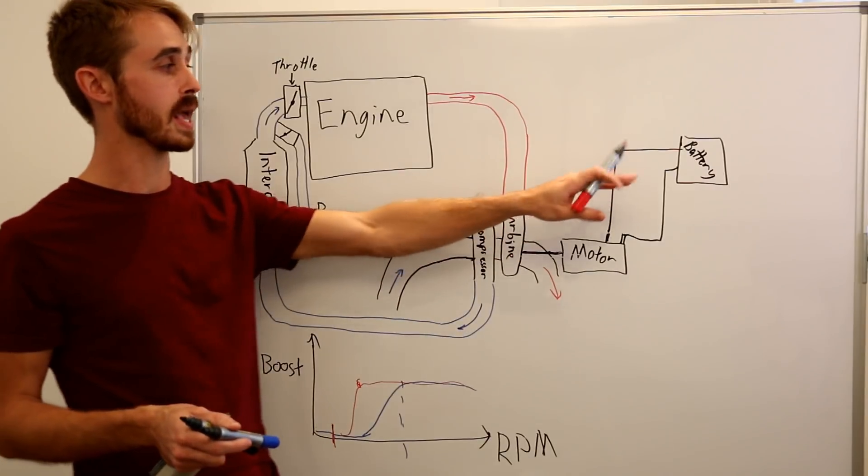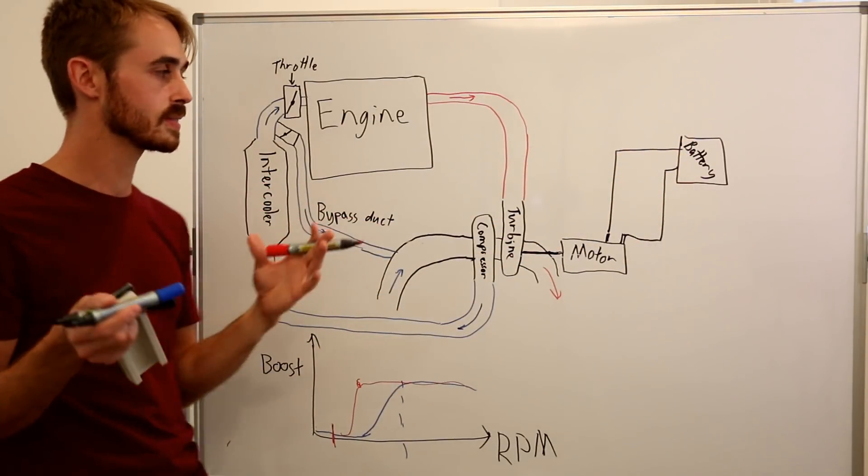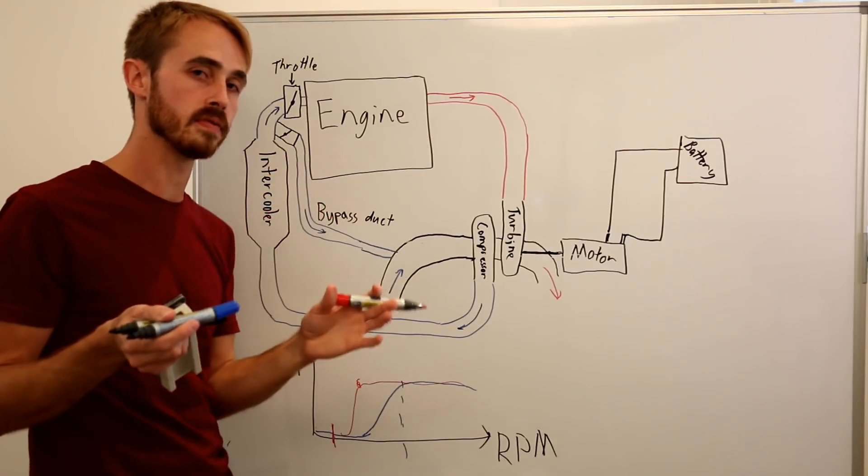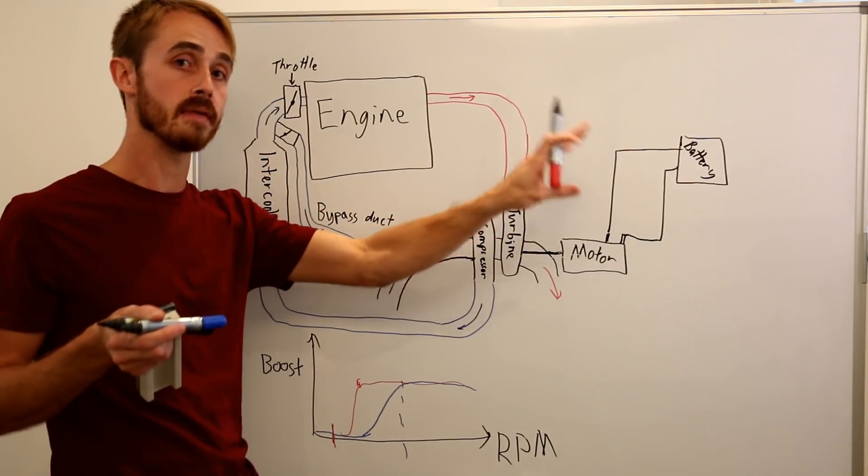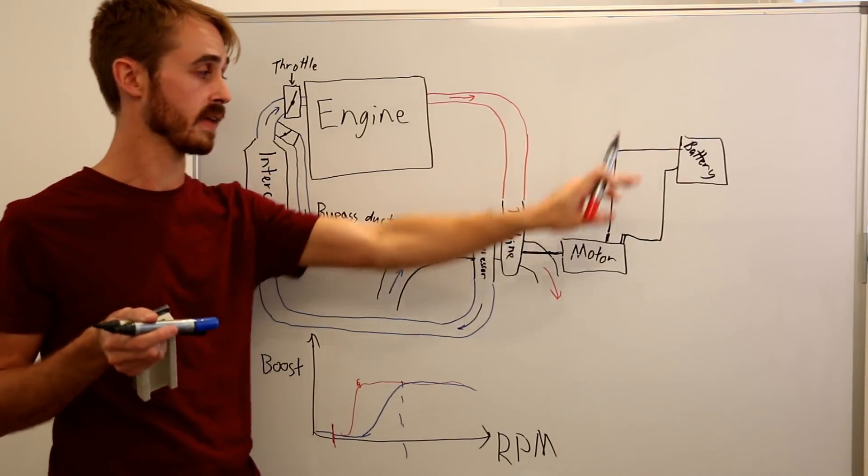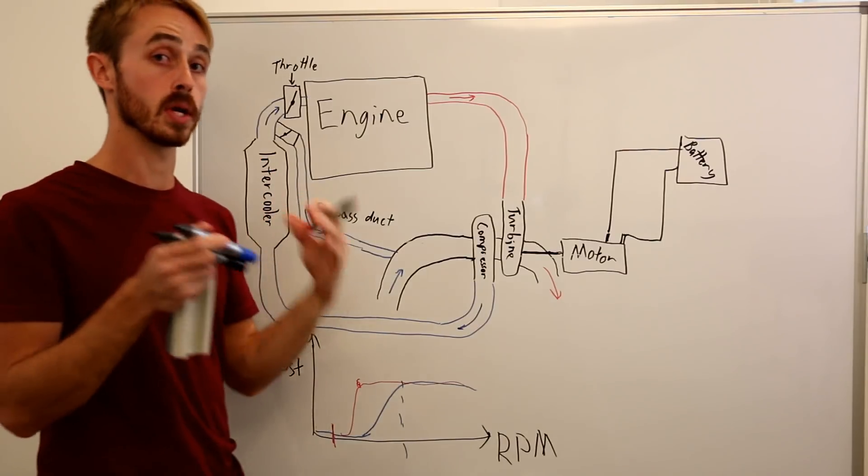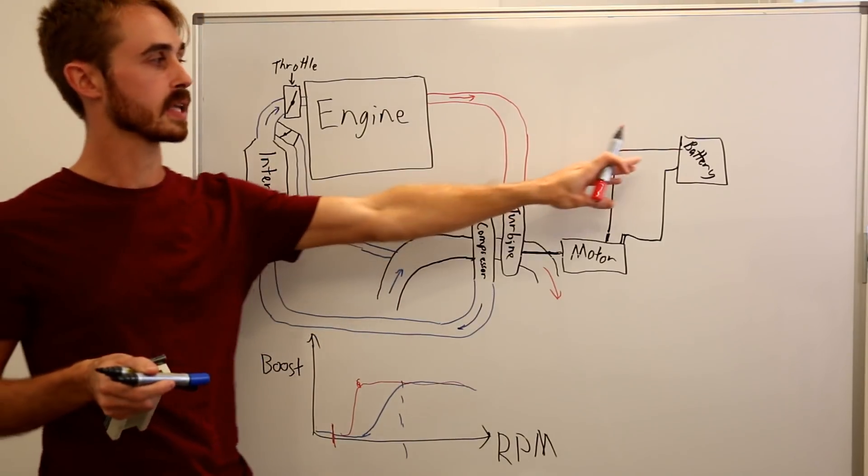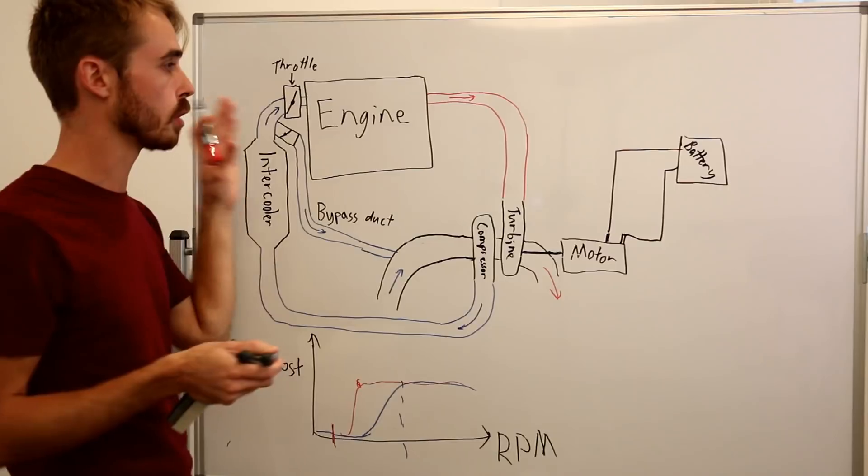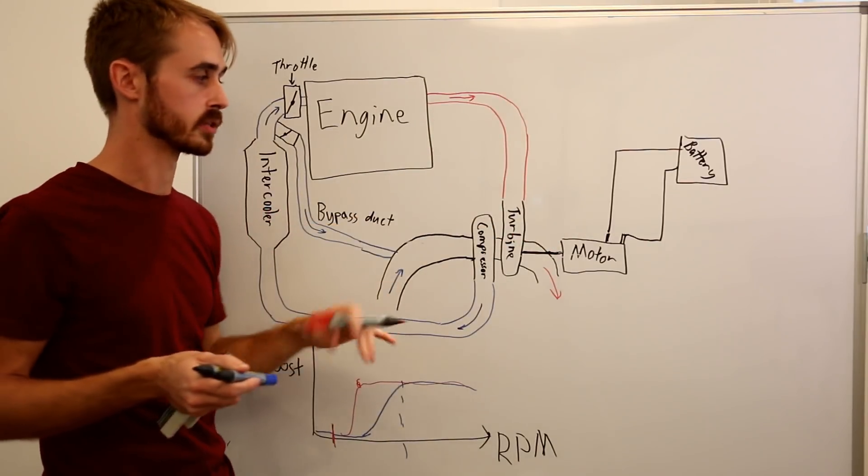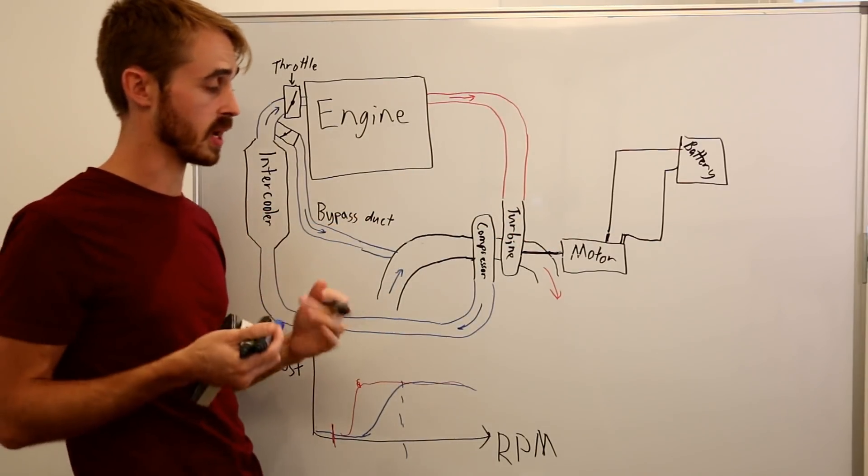Now of course the motor's got to get energy from somewhere, so we've got a battery there. This is one of the reasons why it works well in a hybrid vehicle because we already have a substantial battery infrastructure available. Let's assume though that we're not in a hybrid vehicle. We need some way of generating energy. The alternator from the engine is going to provide some of this, but we need to recover some of this energy as well.